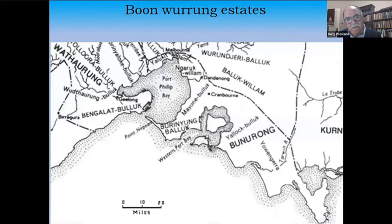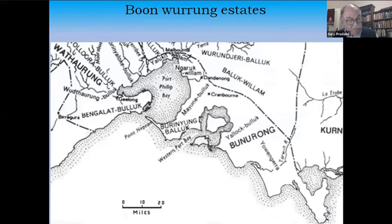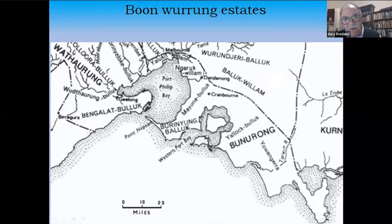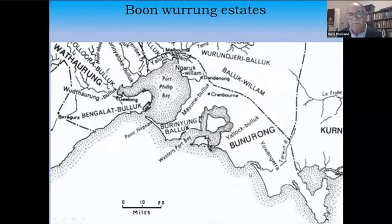To give you another indication, the different language groups are marked not by lines drawn on a map, but by the presence of a physical feature or some aspect of the natural landscape. For example, in the case of Boon Wurrung and Woiwurrung, where water streams drain into the Yarra, you are on Woiwurrung territory. Where water drains into the bay or Bass Strait, then you are in Boon Wurrung territory — a simple rule that defines their boundaries.